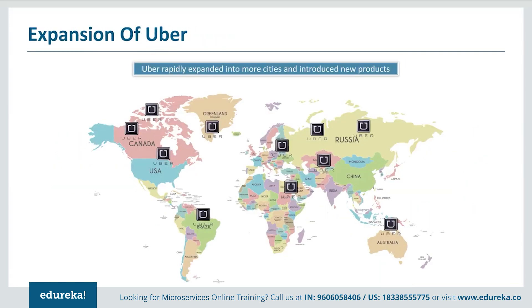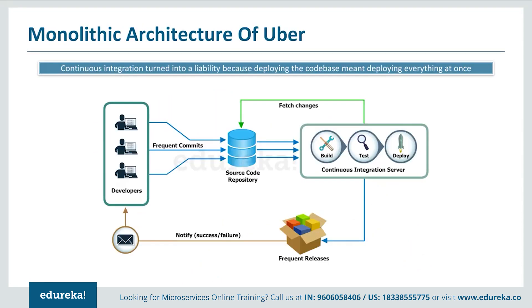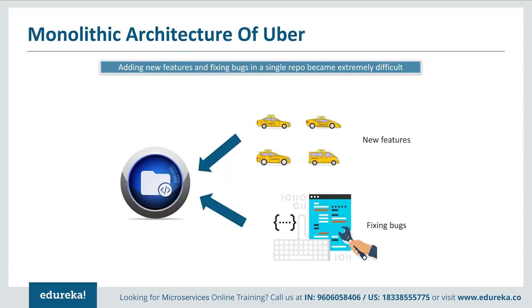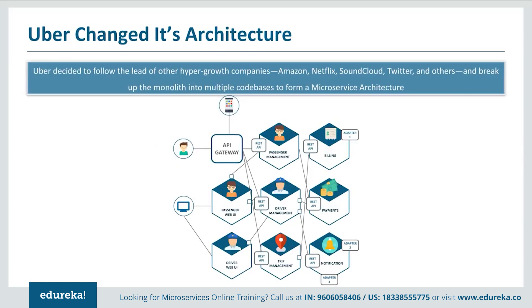As Uber started expanding worldwide, it continuously faced problems of scalability and continuous integration. Developers could not continuously build, test, deploy, and release software frequently as Uber expanded city-wise. Adding new features and fixing bugs in a single repository became extremely difficult. To avoid such challenges, Uber decided to follow the lead of hyper-growth companies like Amazon, Netflix, SoundCloud, and Twitter, and broke down its monolithic framework into multiple code bases to form a microservice architecture.